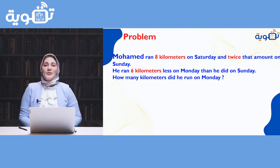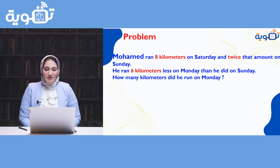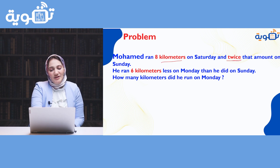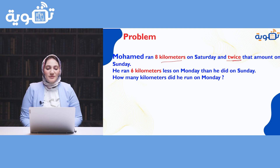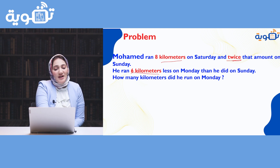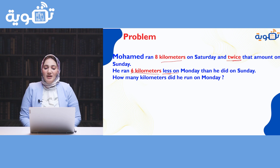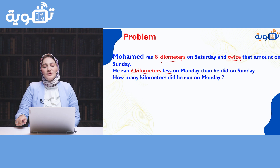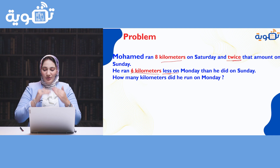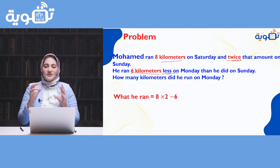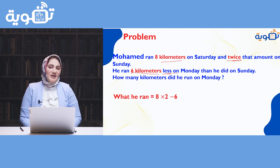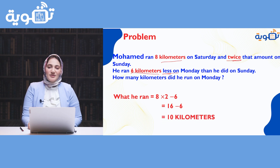Now we have a story problem. How do you solve a story problem? Read it more than once until you understand. Muhammad ran 8 kilometers on Saturday and twice that amount on Sunday — 'twice' means times two. He ran 6 kilometers less on Monday than he did on Sunday. How many kilometers did he run on Monday? This is a multi-step problem. Write 8 × 2, because of 'twice.' Then 'less than' refers to subtraction. So the operation is 8 × 2 - 6. According to PEMDAS, multiplication first: 8 times 2 equals 16, minus 6 equals 10 kilometers.